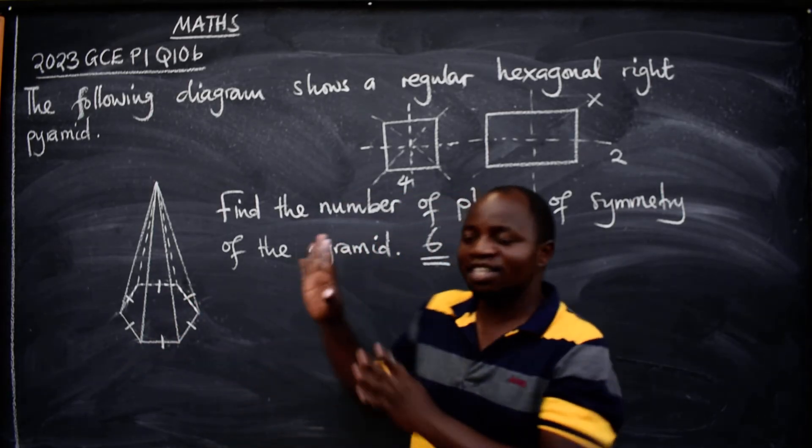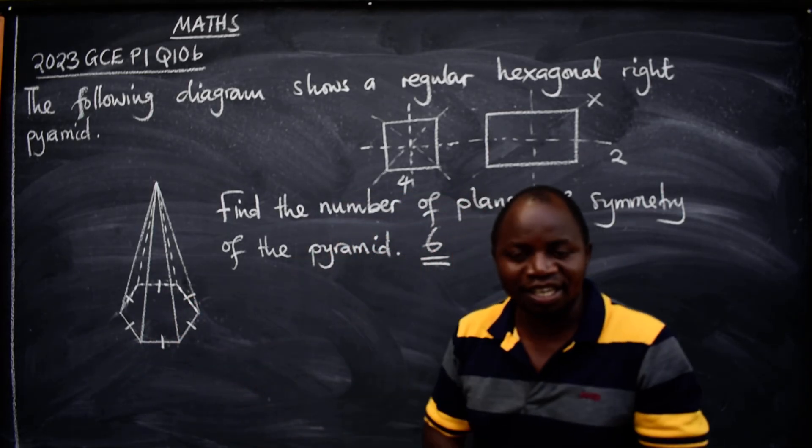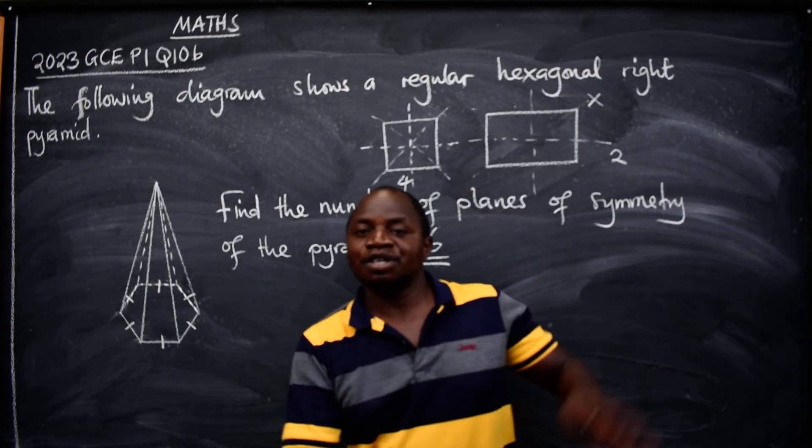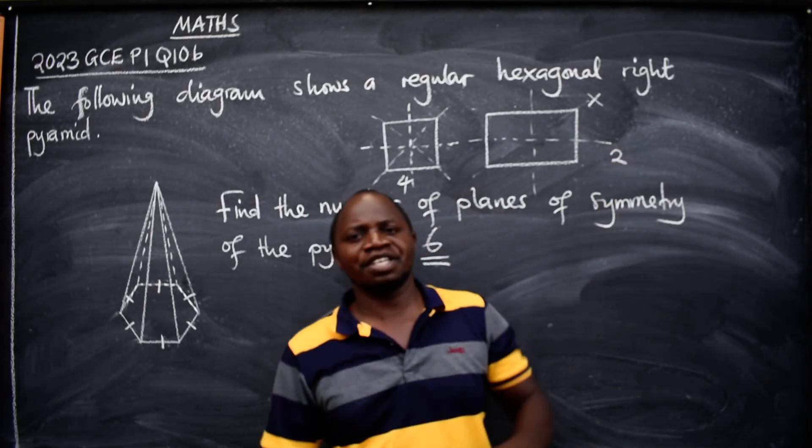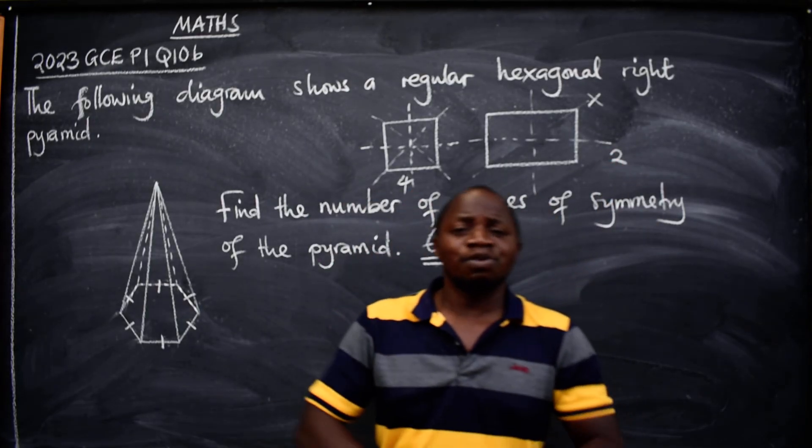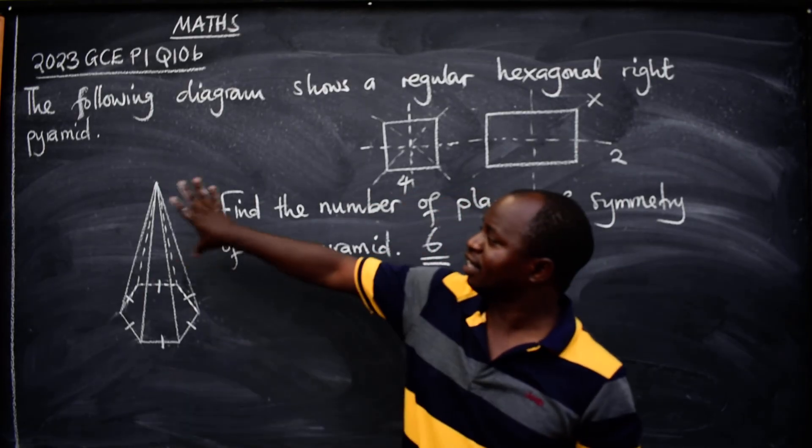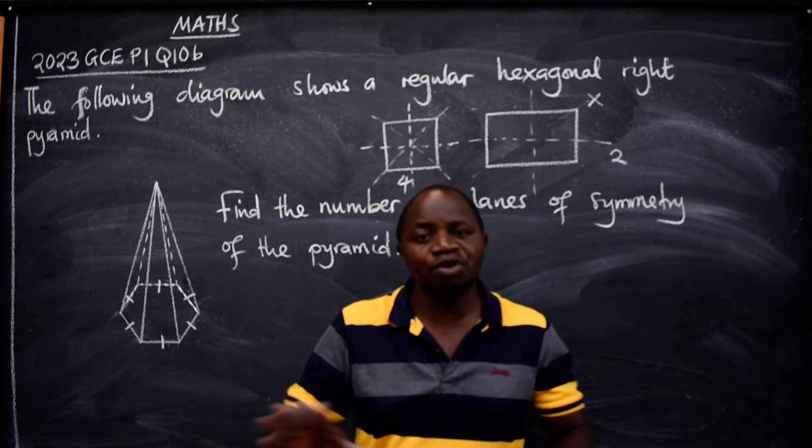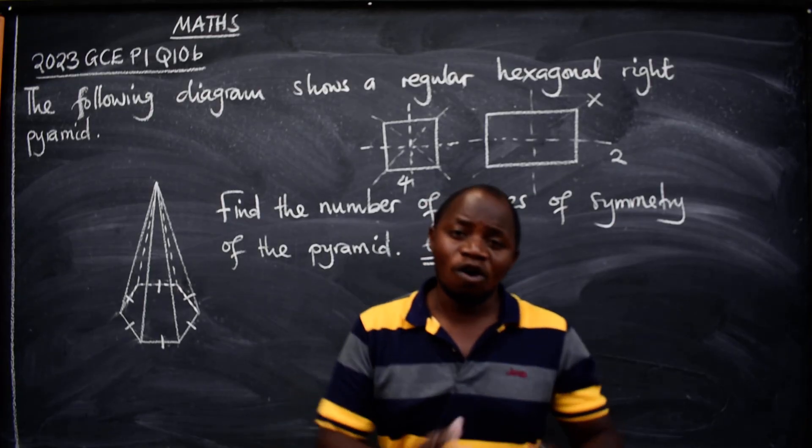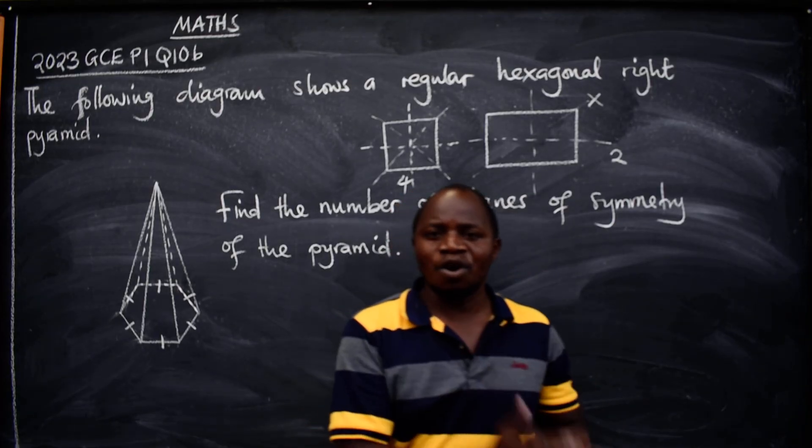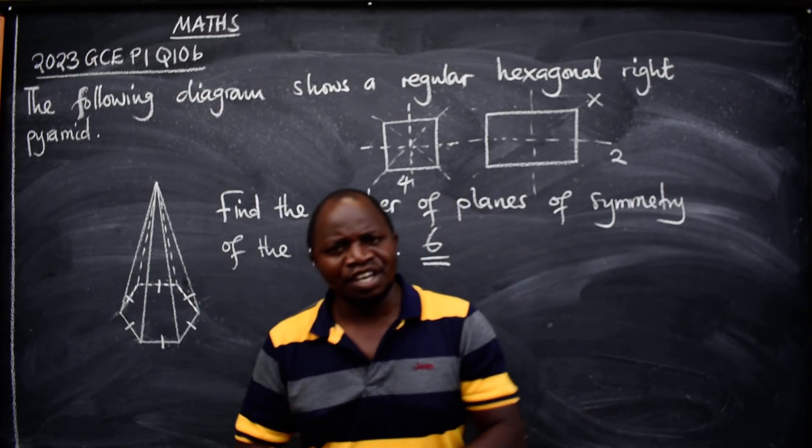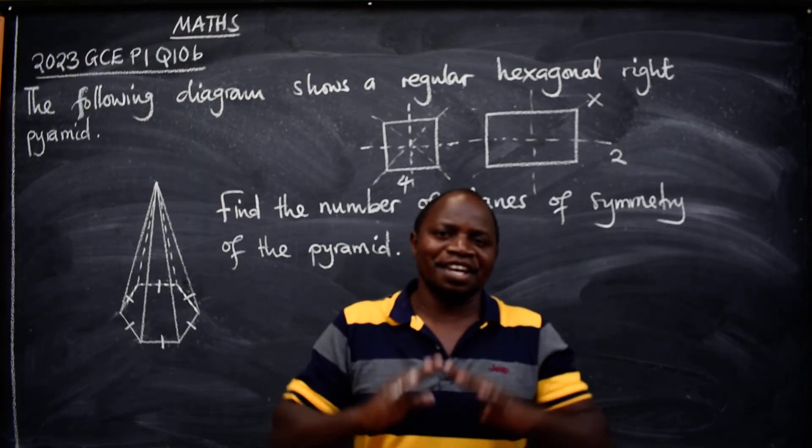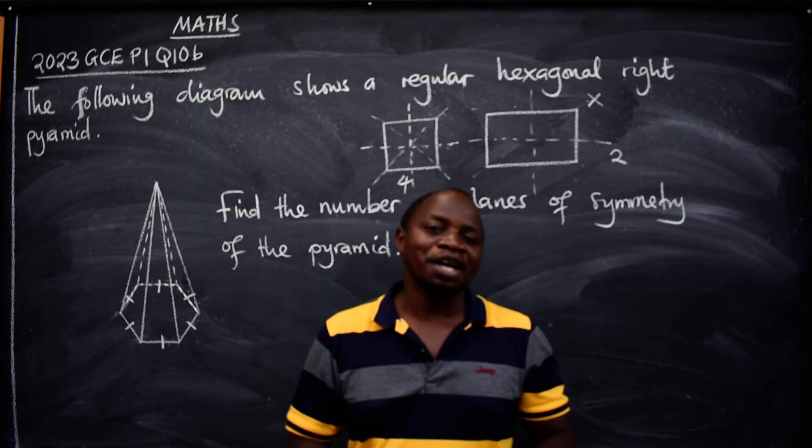Remember under this topic, this is not the only question that comes in this form. They can also ask you to state the number of lines of symmetry. They can also ask you to describe the given pyramid or whatever shape that you've been given. Also to state the order of rotational symmetry. So those things must be here under the topic, then you will get it please.